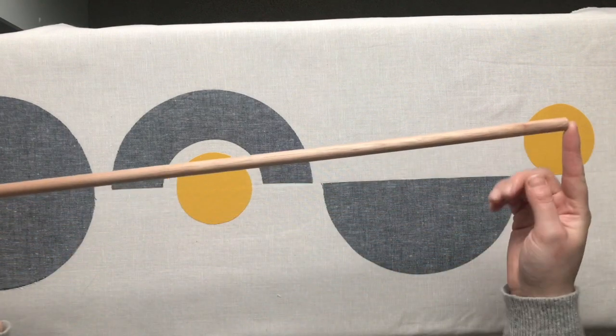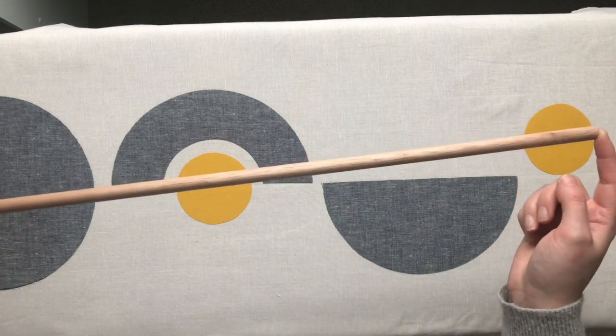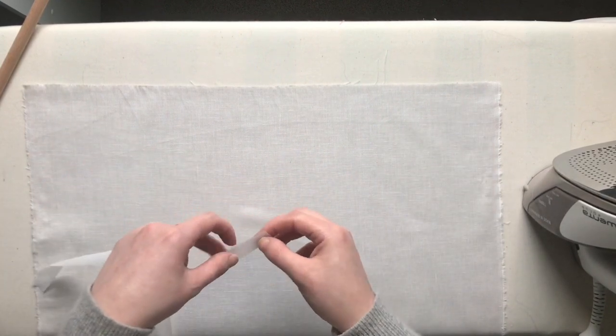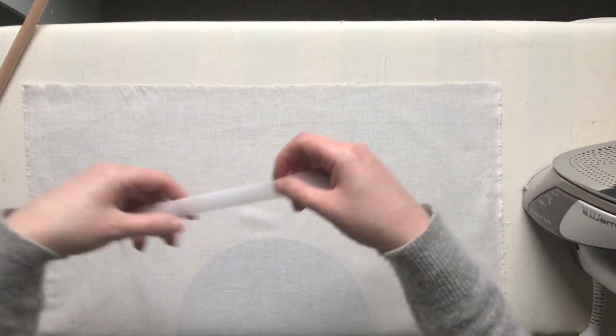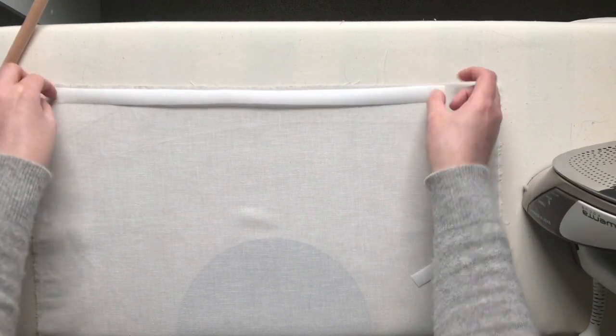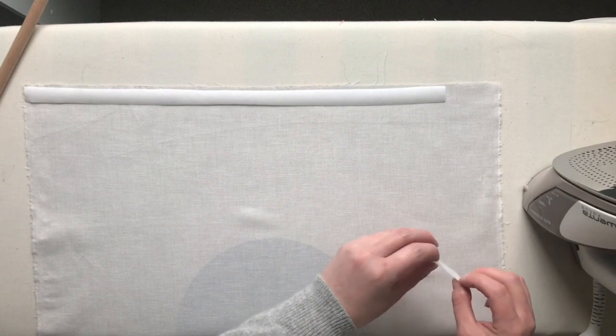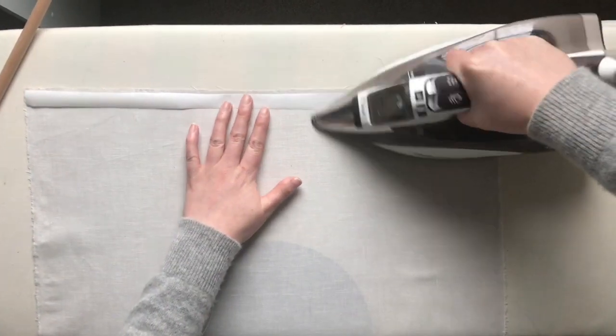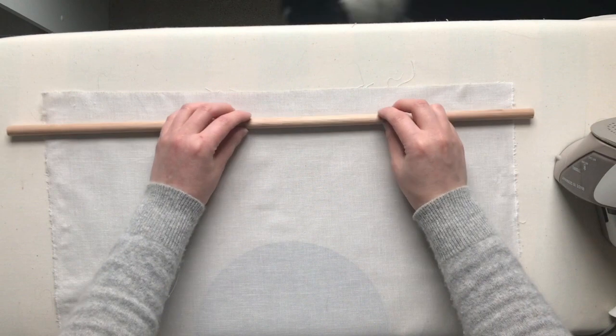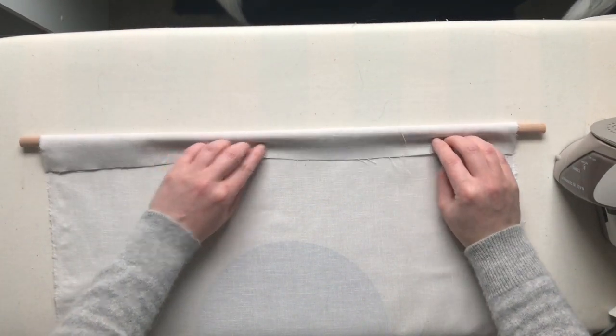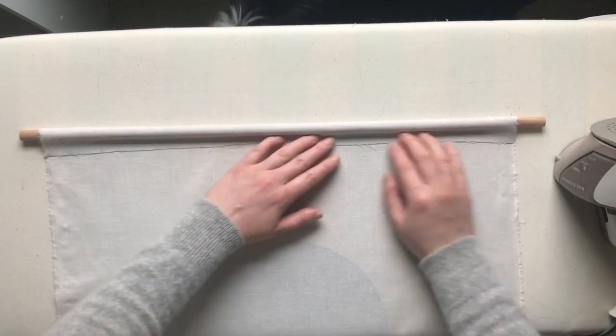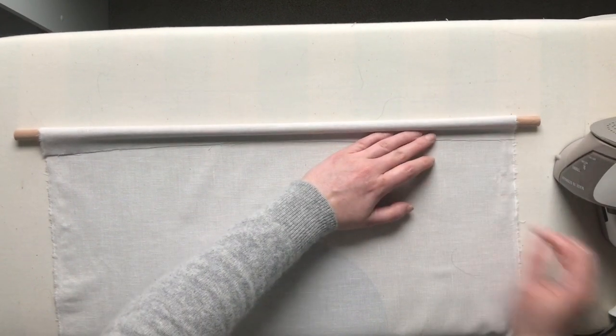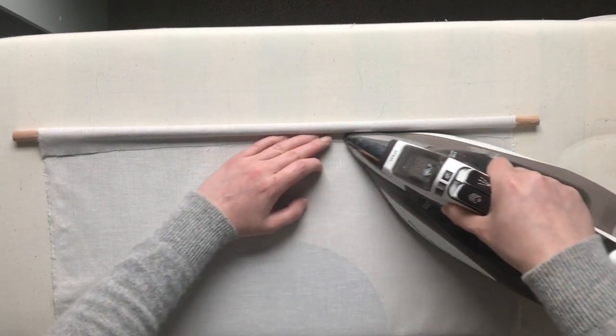The last step before we're ready to hang this is to create a pocket across the top for our dowel to go through. Here I am at the top side of my wall hanging and I'm going to apply a half inch piece of my Wonder Under across the top here. I actually had to use two pieces, just piece together. Now that that's applied I want to wrap it around my dowel and find the spot that needs to be in order for my dowel to fit through. It's going to be right around there and then I'm going to take my iron and press it right in here.